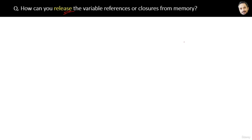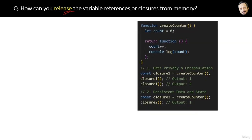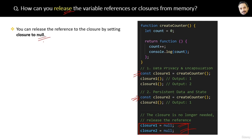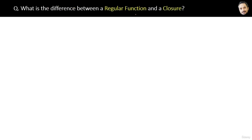How can you release variable references or closures from memory? You can release the closure when it is no longer required by assigning null to it. The answer is: you can release the reference to a closure by setting the closure to null, which will prevent the memory leaks caused by closures.